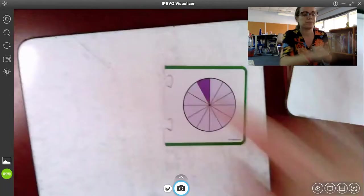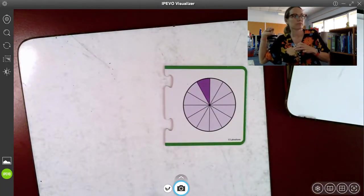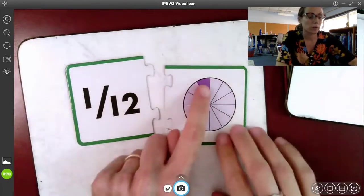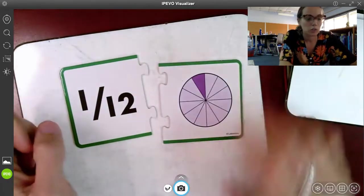And this is going to be our last one. What's the fraction? One-twelfth. That's right. One part is shaded, and there are twelve total parts.